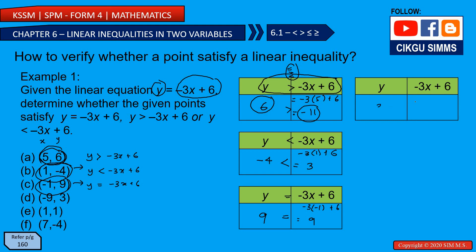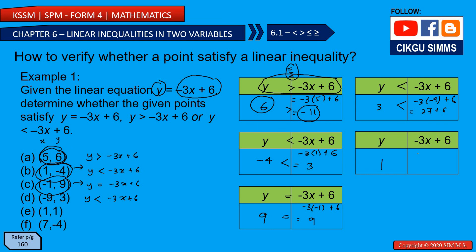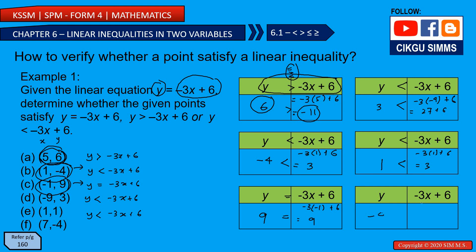For point (-9, 3): substituting, -3(-9) + 6 = 27 + 6 = 33. That's a bigger number, so 3 is smaller than 33 — y is smaller than -3x + 6. For point (1, 1): -3(1) + 6 = 3, and 1 is smaller than 3. For point (7, -4): -3(7) + 6 = -21 + 6 = -15, and -4 is greater than -15. You can check with the previous graphing method and you will get the same answers.